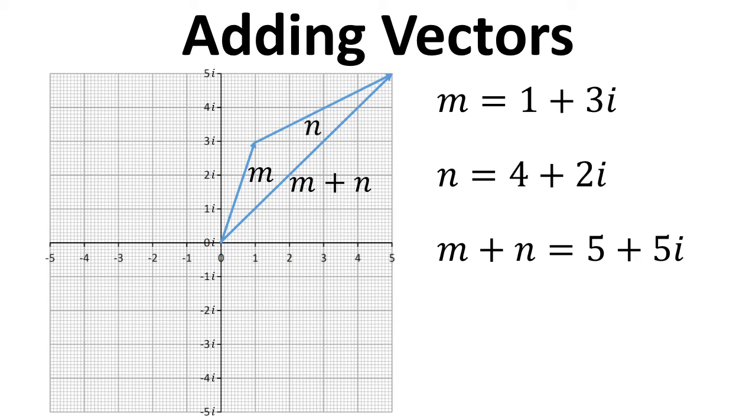So if we add up the real parts, the 1 plus the 4 gives us 5, and then the imaginary parts, 3i plus 2i gives us 5i. And we can see that that matches up between the graphical representation and when we add up the complex numbers.